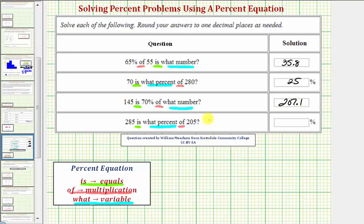Now for our last question, 285 is what percent of 205? So we have 285 is, means equals, 'what percent'? Let's use the variable p.